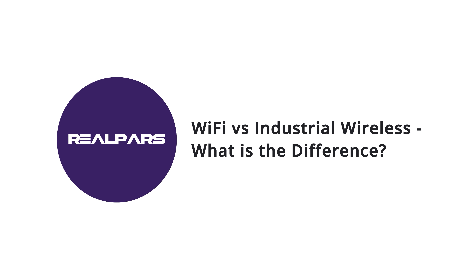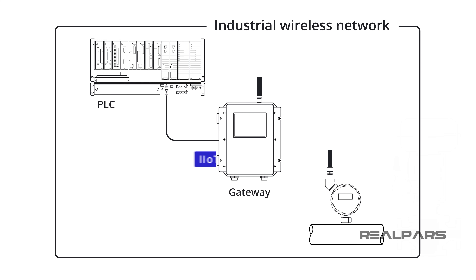When it comes to wireless networks, we can think of two main types. Wireless networks we use at home or the office, such as Wi-Fi, Bluetooth, and 5G, and industrial wireless networks such as IIoT — or Industrial Internet of Things — that we as automation engineers use in industrial environments such as power plants, oil refineries, or water treatment plants.